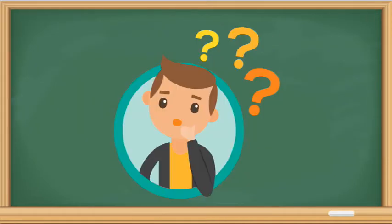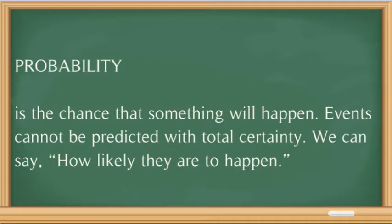To start off, before we describe the technical terms related to probability, let us first know what we mean when we say probability. Probability is the chance that something will happen. Events cannot be predicted with total certainty — we can say how likely they are to happen. So, probability is the chance or possibility of an event to happen.